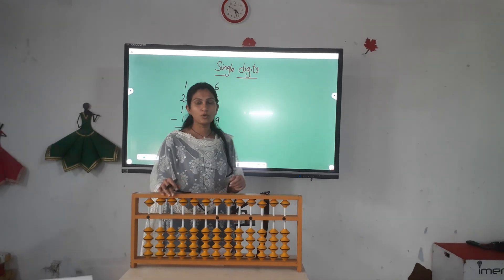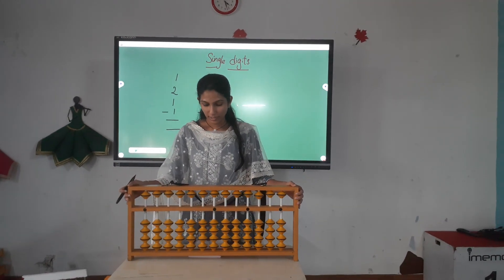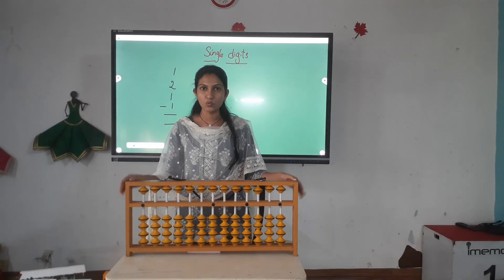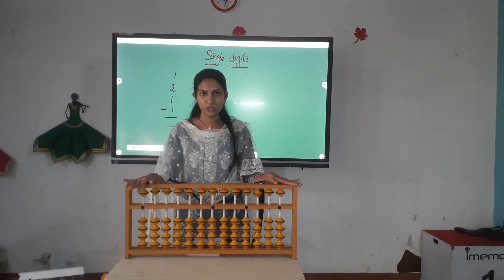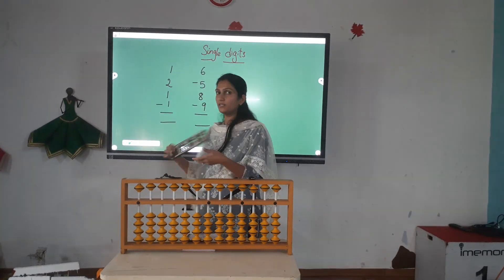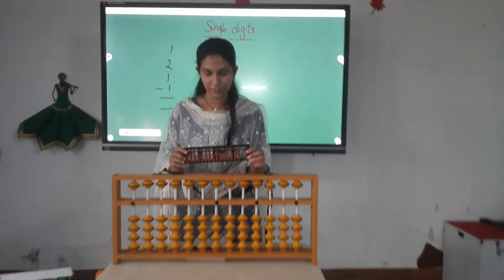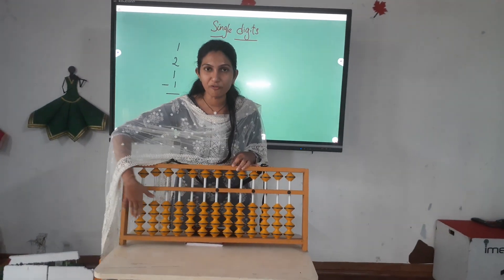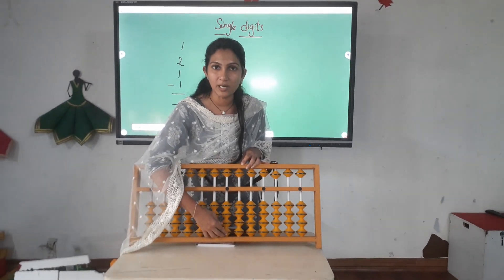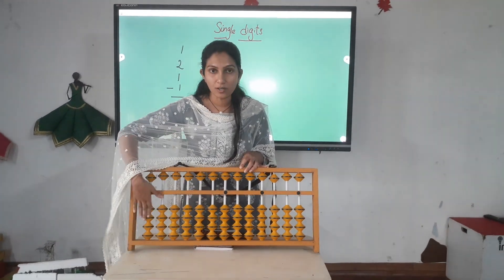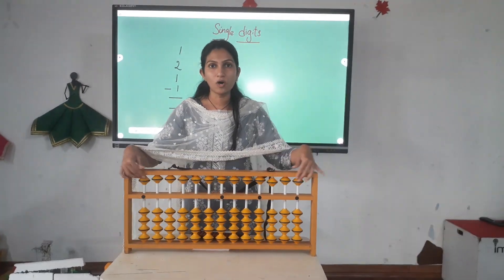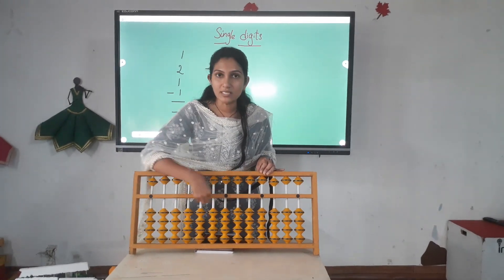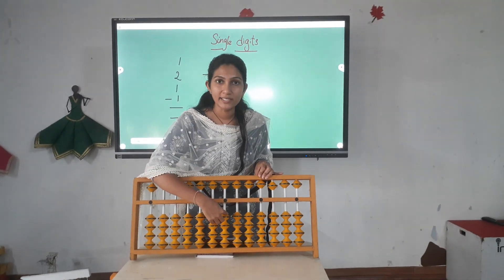Now let us go to the Abacus tool. What is the tool and what are the beads called here? Here you can see this is the teacher Abacus, which is used by me to teach your children. And this is the student Abacus, which is used by your child. Here you can see there are a number of beads, and each bead represents a value. These are all called the lower beads, these are all called the upper beads, the white ones are called the rods, and this is the center beam.